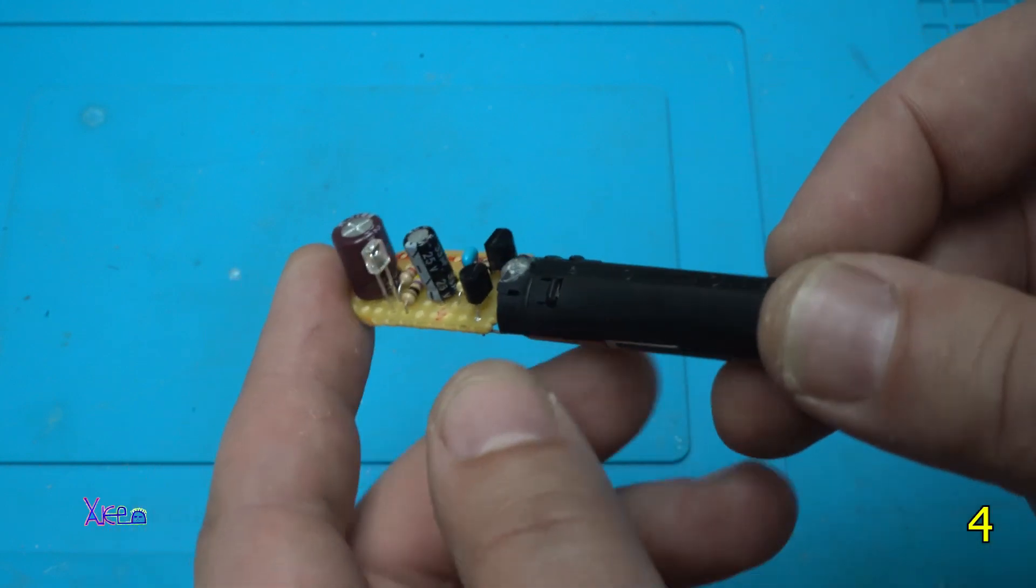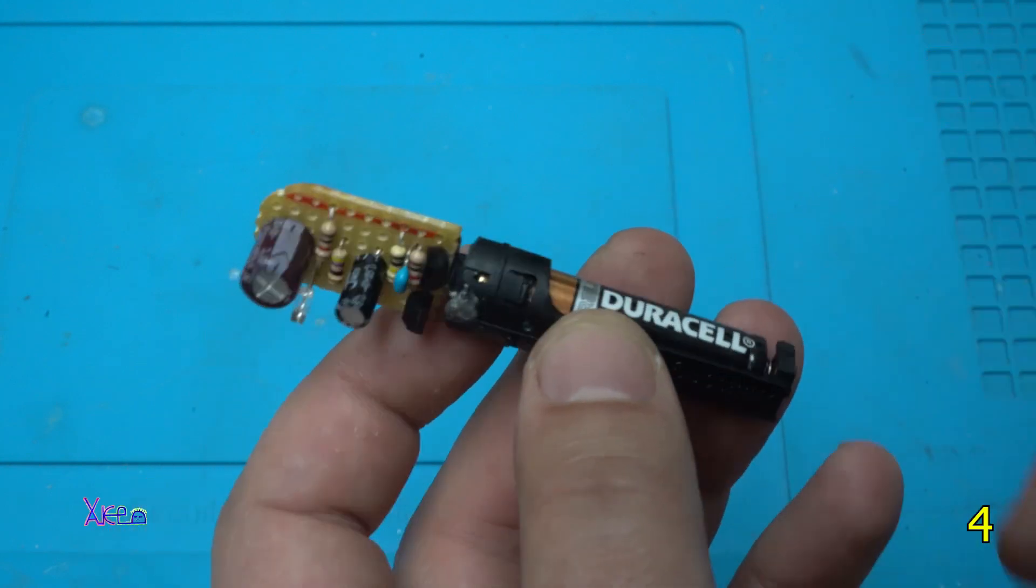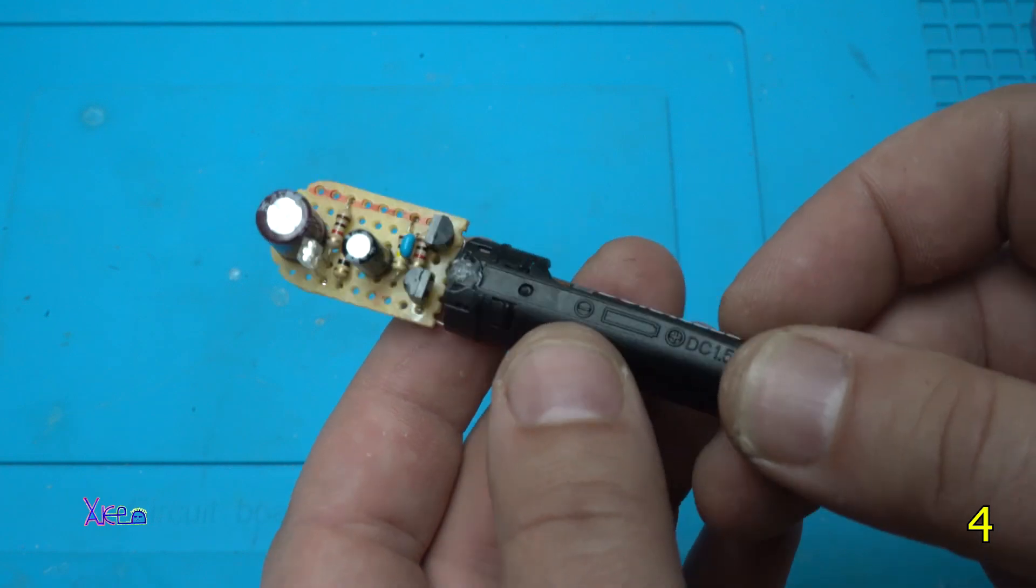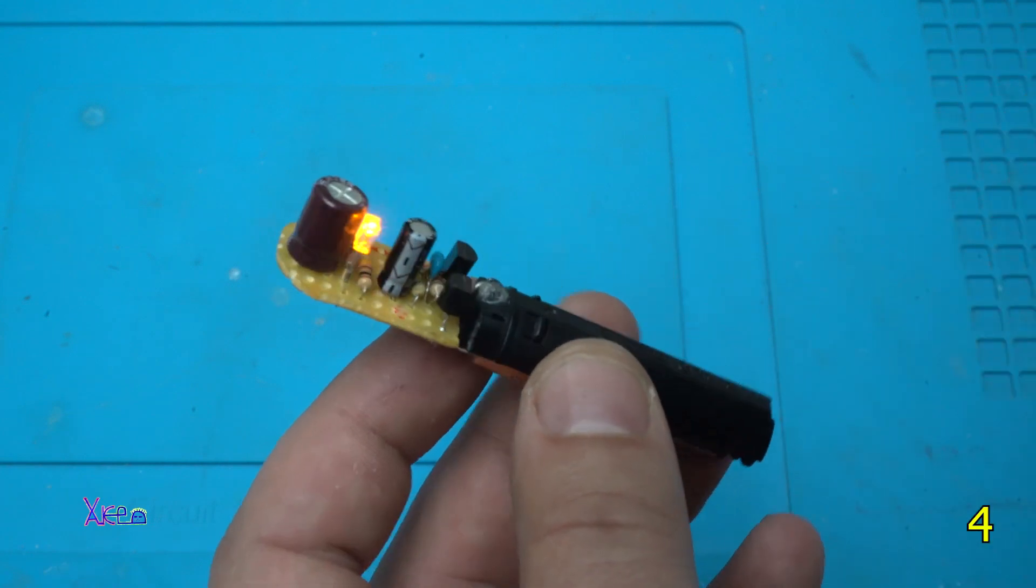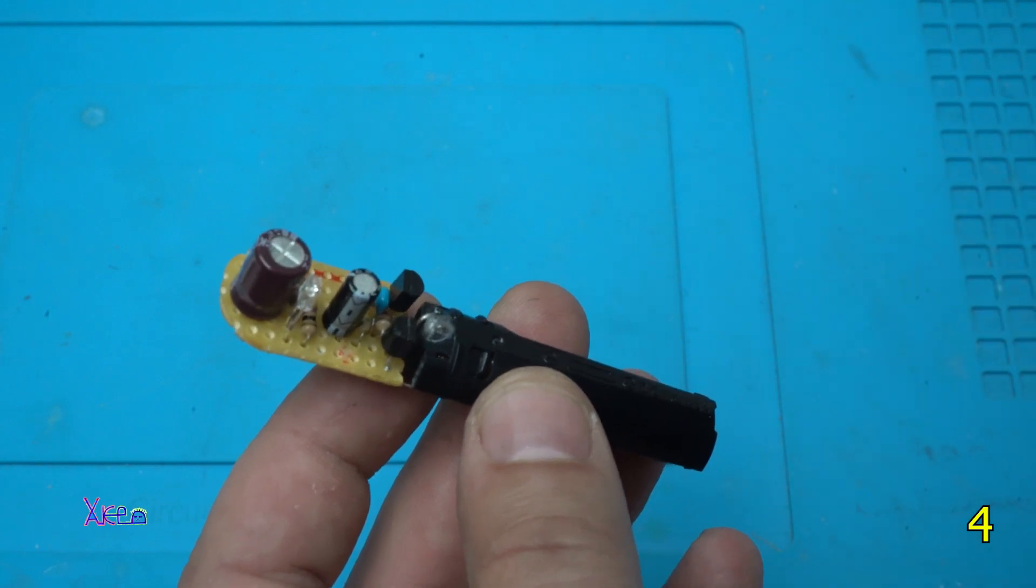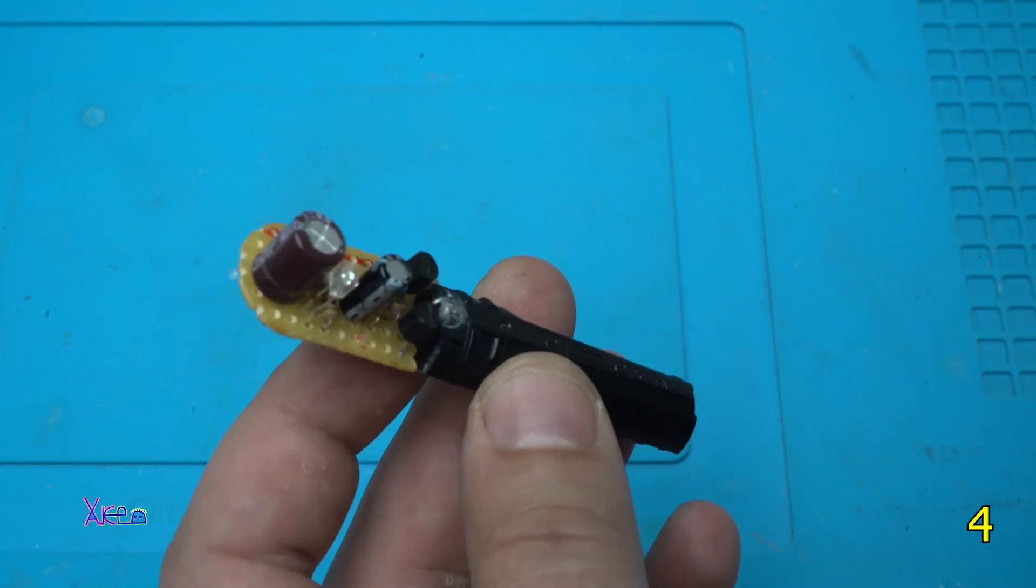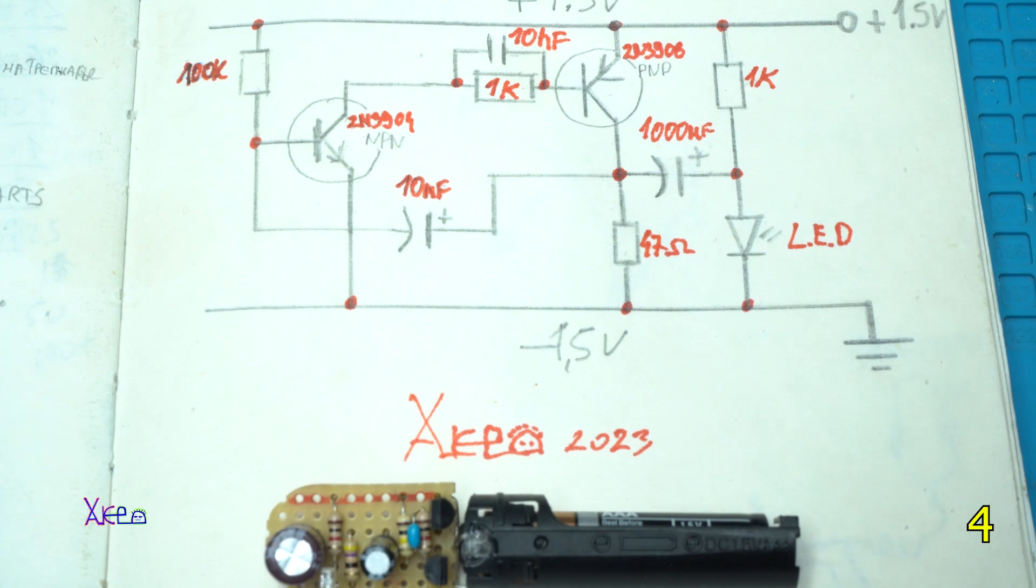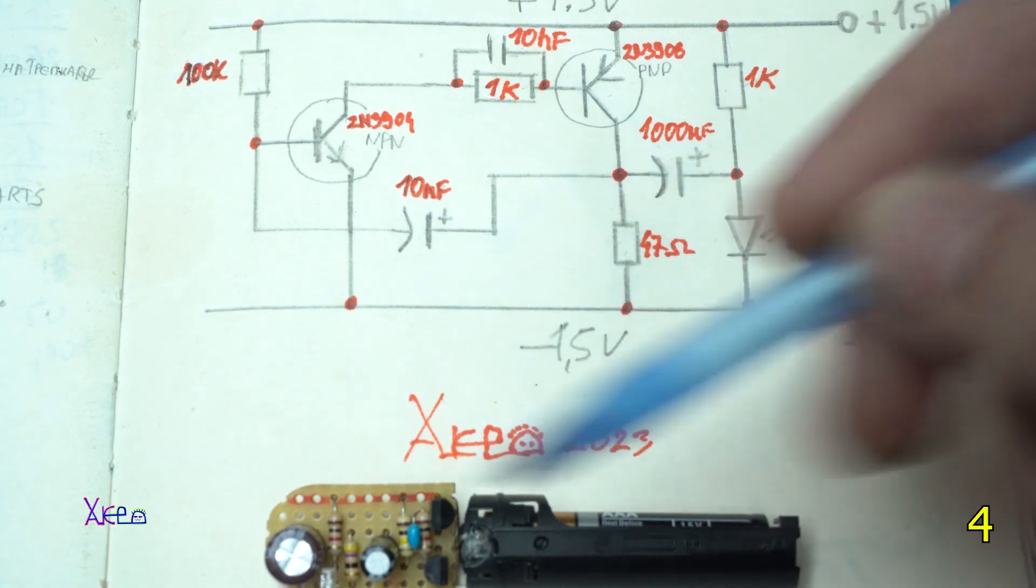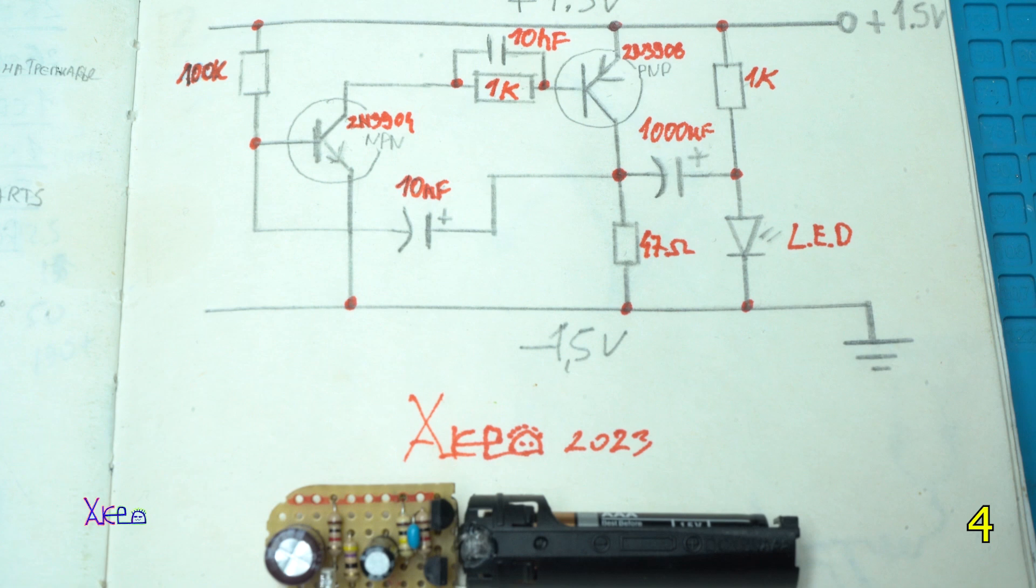And that way is saving the energy. That's why it will blink for around one year with only one battery 1.5 volts. If you want to make this awesome LED blinker, long time LED blinker...